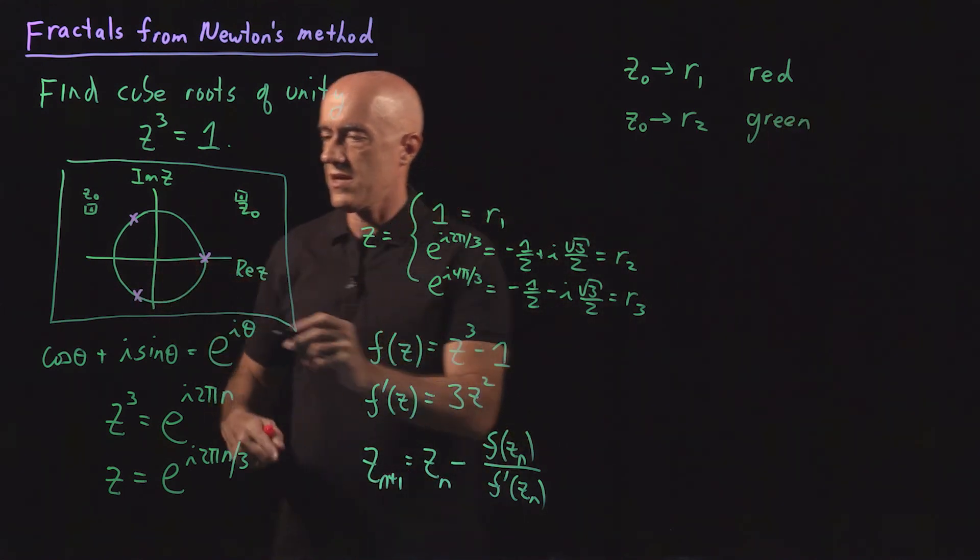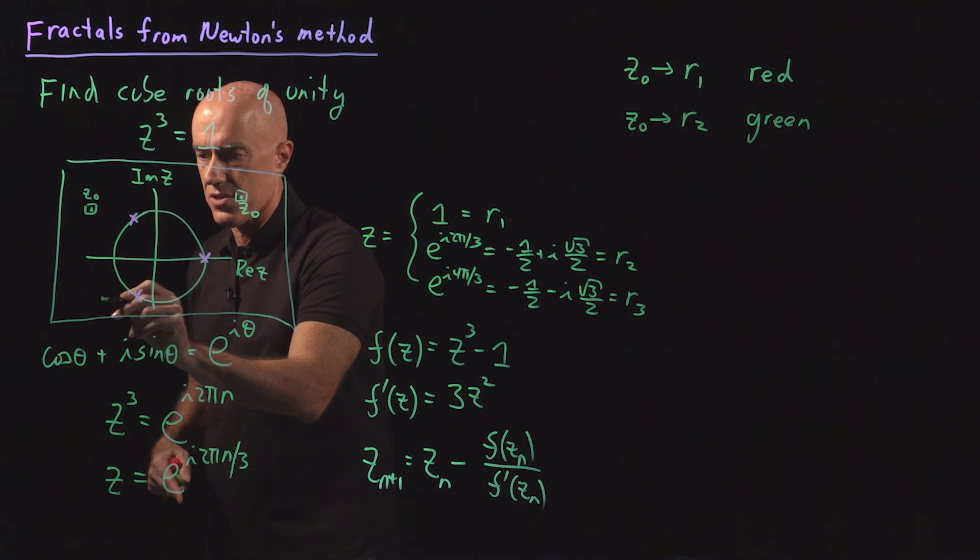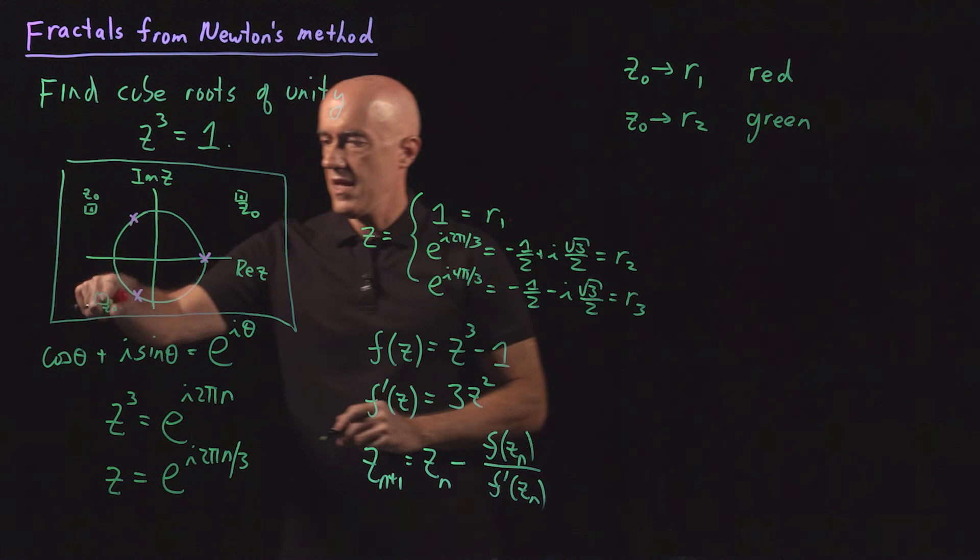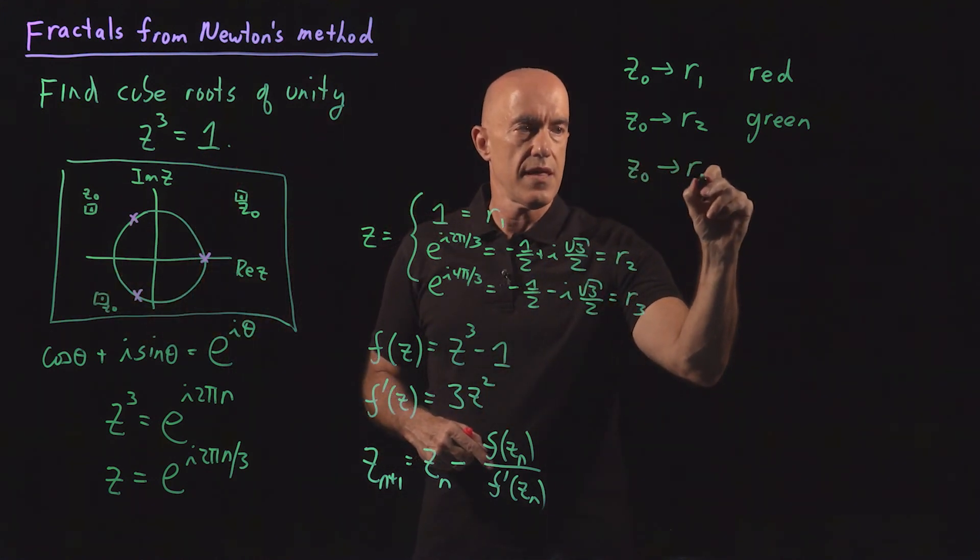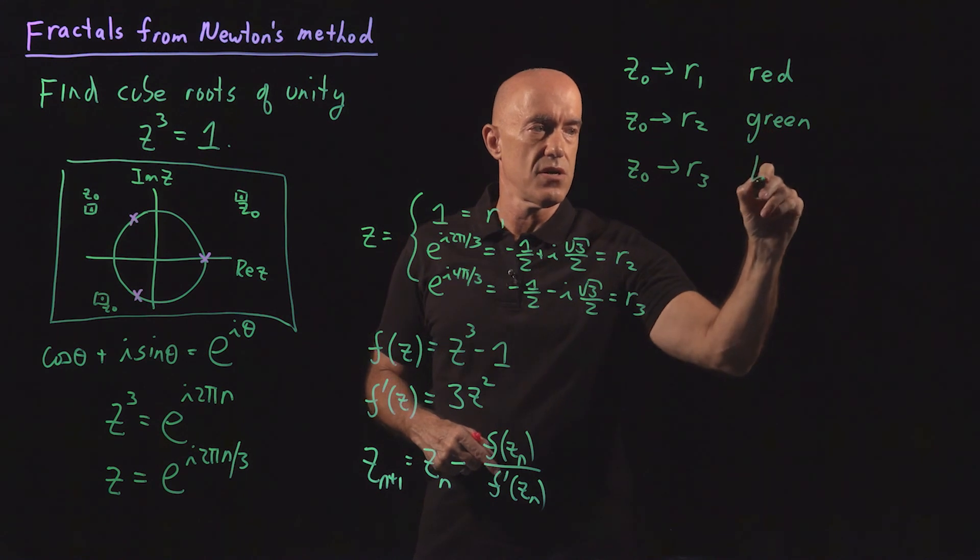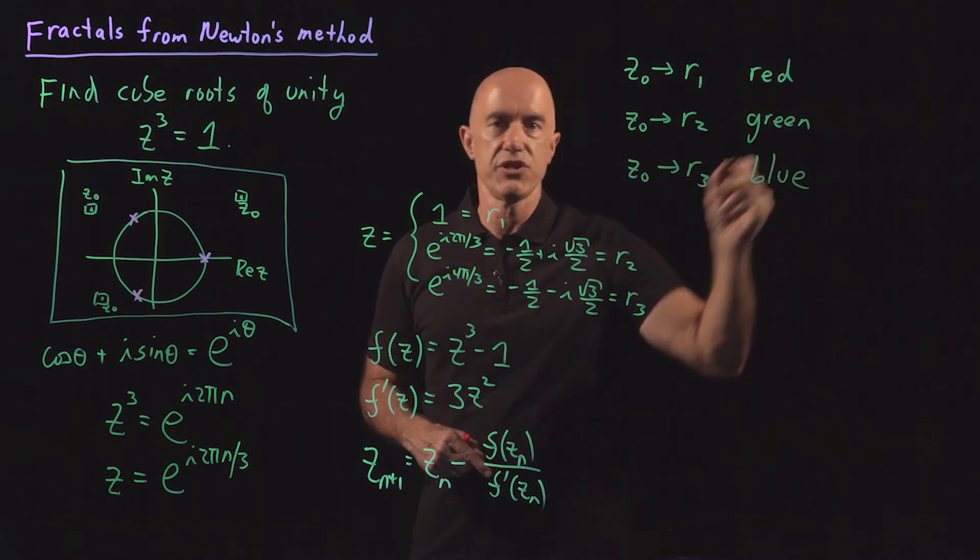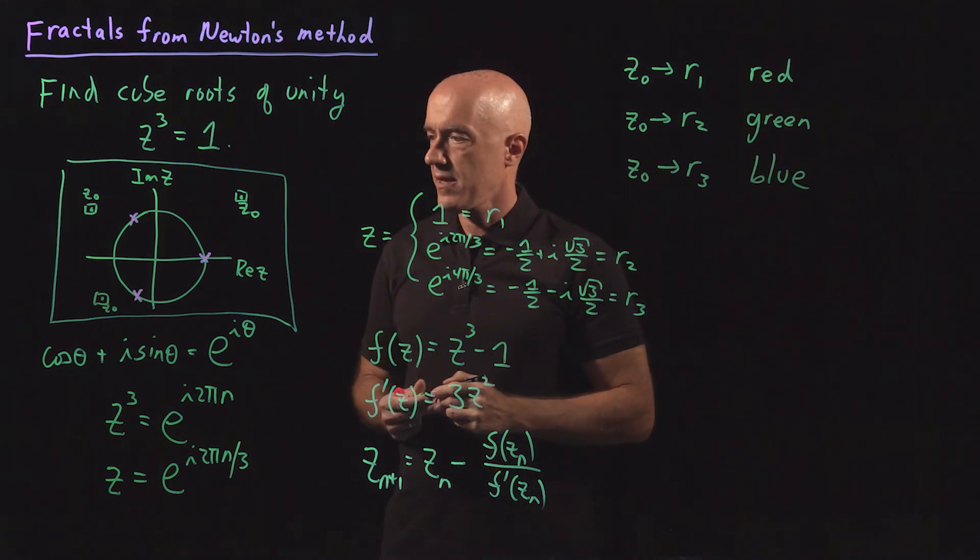And then maybe another z naught over here close to r3. If that z naught converges to r3, then we're going to color the pixel blue. RGB blue scheme.